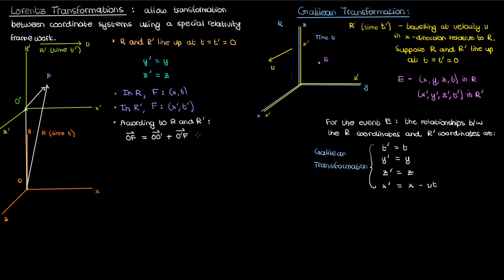The next few statements are important and I'm going to emphasize which reference frame they are relative to. In the reference frame r, of is just the position of event f relative to o, which is x. o o' is the position of the origin of r' relative to o, which is just the velocity of the reference frame r' times the time elapsed t according to the reference frame r.